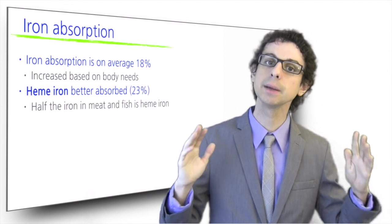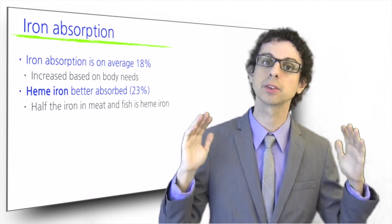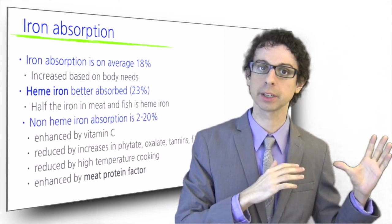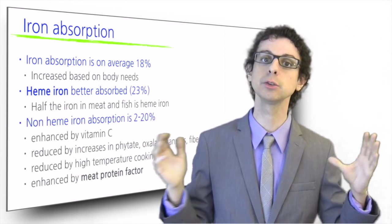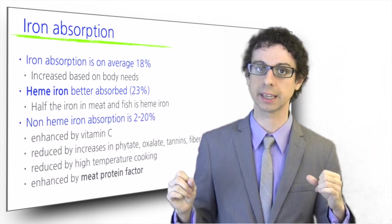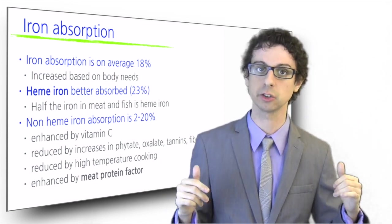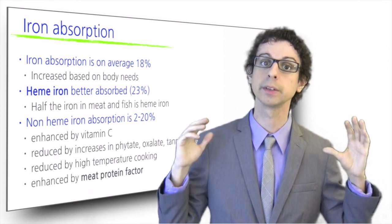The absorption of non-heme iron in contrast is variable and is usually between 2 and 20%. Non-heme iron is the other half of the iron in meat and fish and the only type of iron found in plant foods.